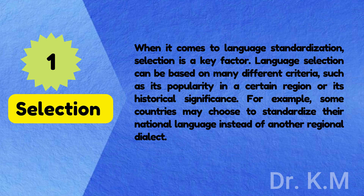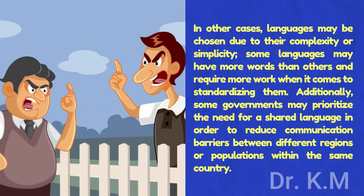The first step is selection. When it comes to language standardization, selection is a key factor. Language selection can be based on many different criteria, such as its popularity in a certain region or its historical significance. For example, some countries may choose to standardize their national language instead of another regional dialect. In other cases, languages may be chosen due to their complexity or simplicity. Additionally, some governments may prioritize the need for a shared language in order to reduce communication barriers between different regions or populations within the same country.